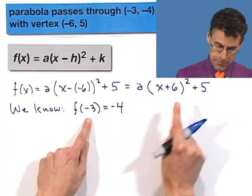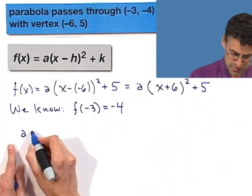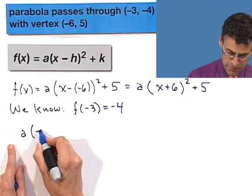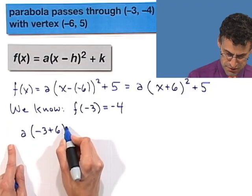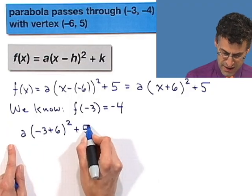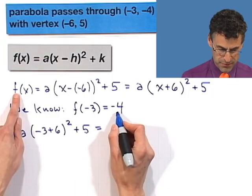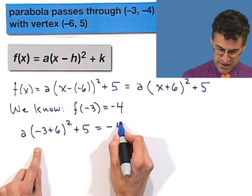So what happens when I plug in negative 3? I get a, the mysterious quantity, negative 3 plus 6 all squared plus 5, and that has to equal the function, the y value, which is negative 4.